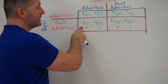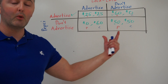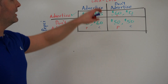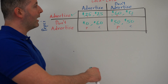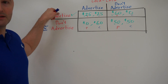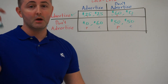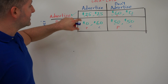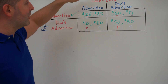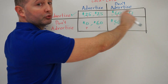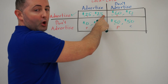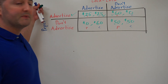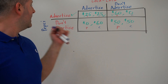Since $25 is greater than $0 and $60 is greater than $50, Pepsi will always advertise. Now for Coca-Cola, we do the exact same thing, but we look at the second number in each cell. We want to know what Coke should do if Pepsi advertises, so we stay in the horizontal row. Coke can earn $25 if they advertise or $0 if they don't — clearly $25 is greater than $0, so if Pepsi advertises, Coke should also advertise.